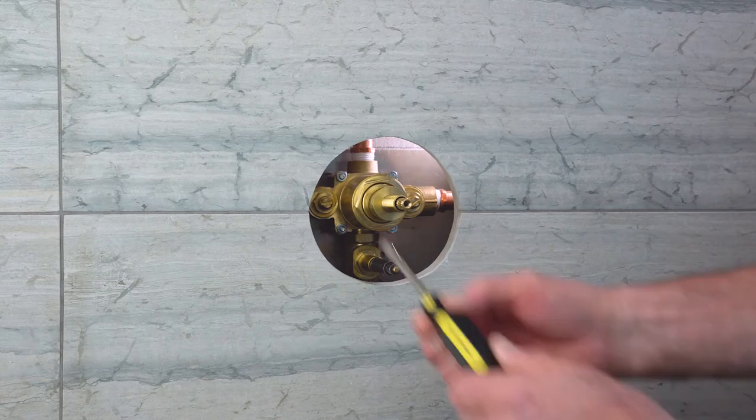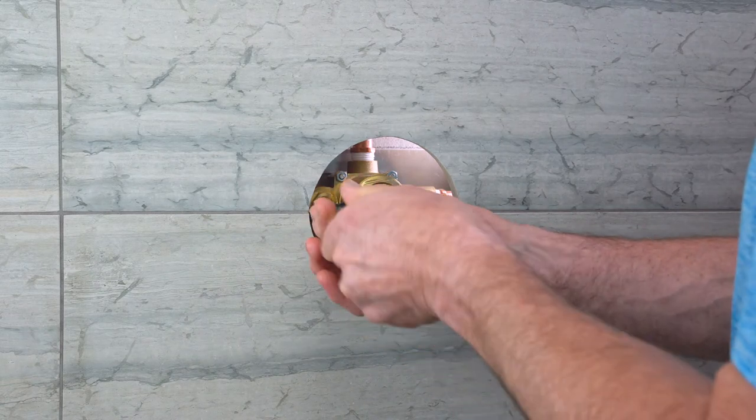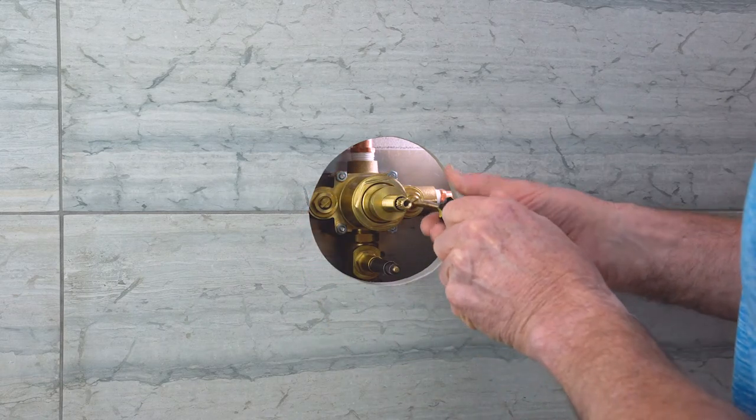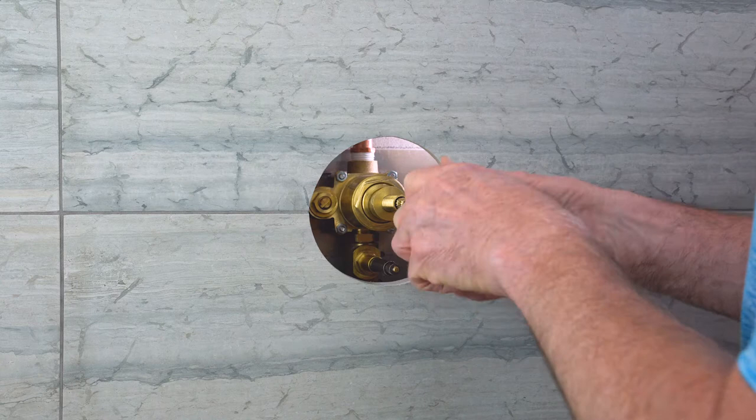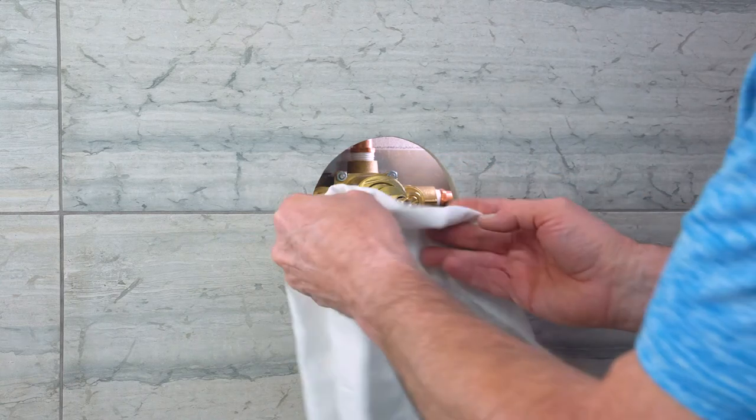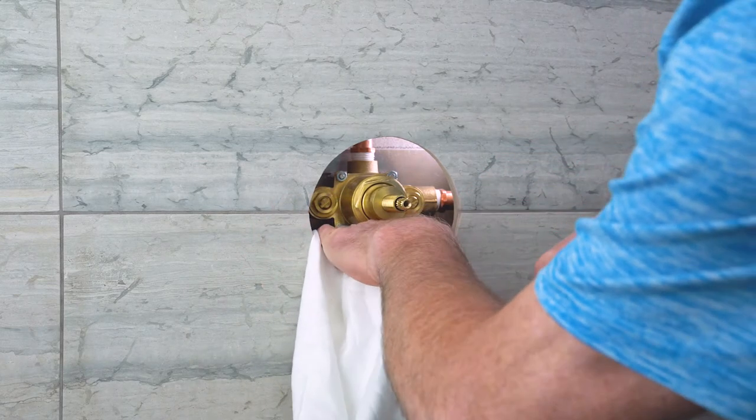Shut off the water with the service stops on the valve. Put a towel in the wall under the valve body to avoid water spills behind the wall.